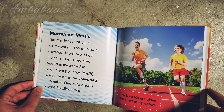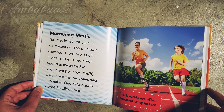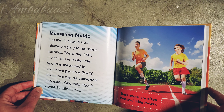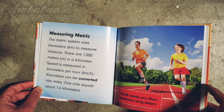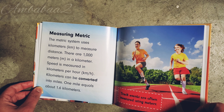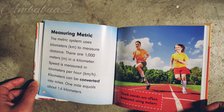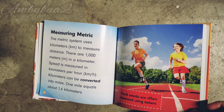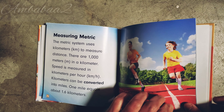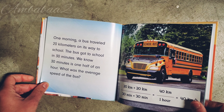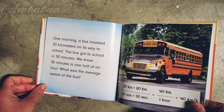Measuring metrics: The metric system uses kilometers to measure distance. There are one thousand meters in a kilometer. Speed is measured in kilometers per hour. A kilometer can be converted into miles — one mile equals about 1.6 kilometers. Tracks and short distances are often measured using meters.